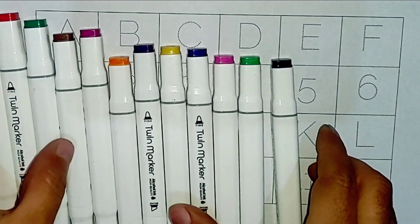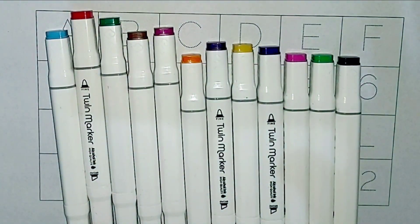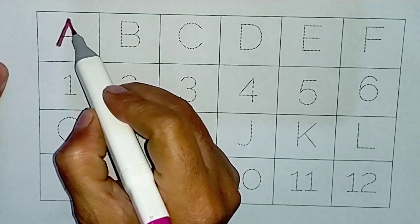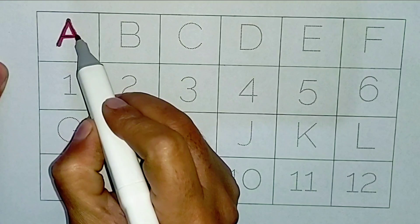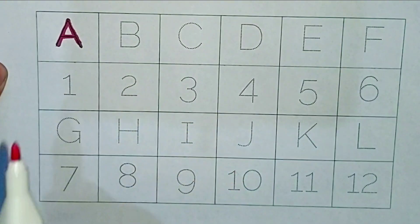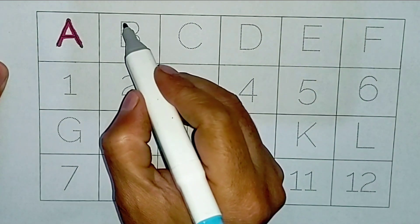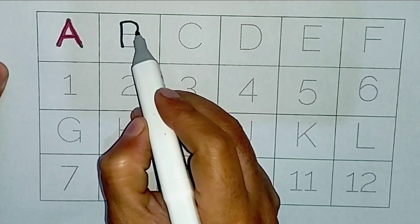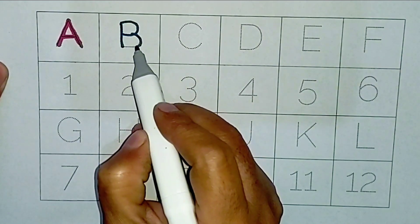A, purple color, A for aeroplane. Blue color, B, B for banana.